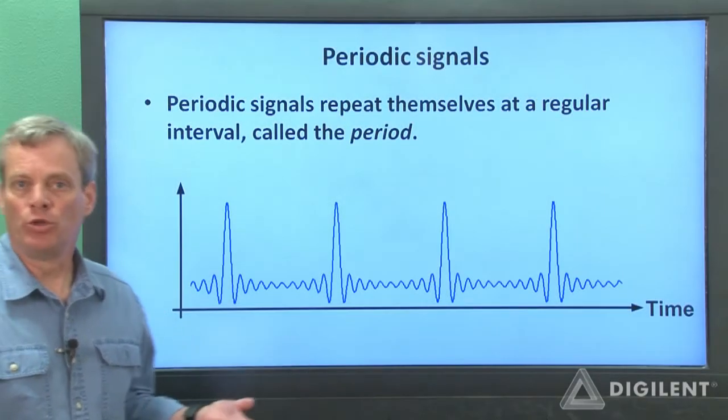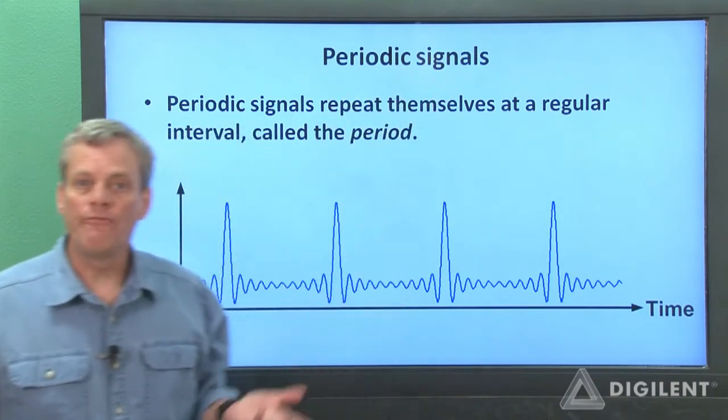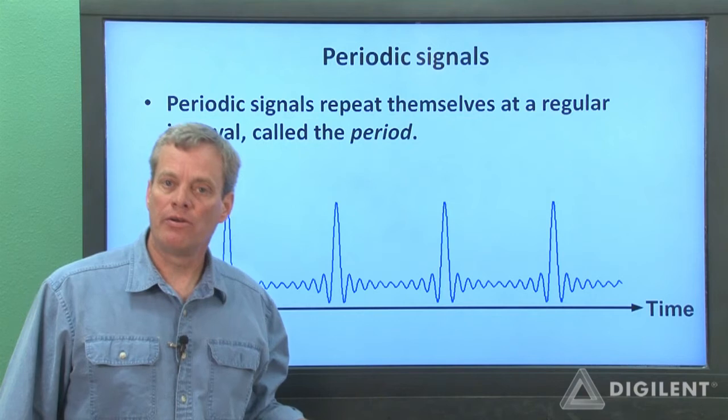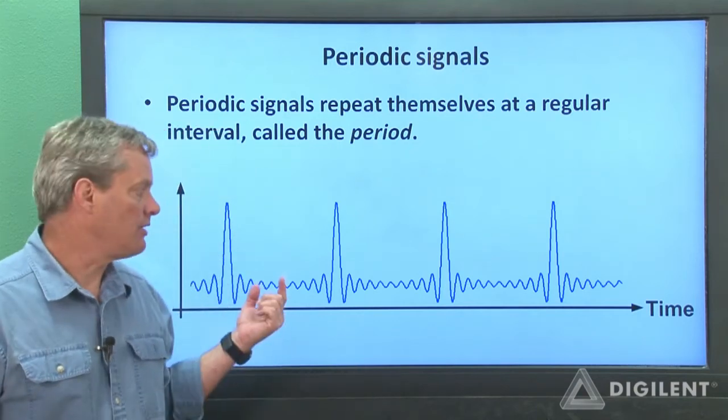Parameters, such as voltage or current, which vary with time, are generically called signals. Waveform generators create what are called periodic signals. This just means that the shape of the signal repeats itself at a regular interval.